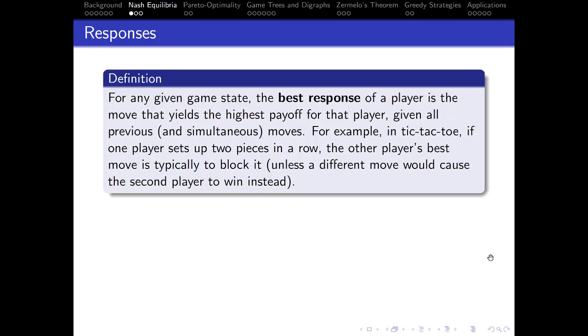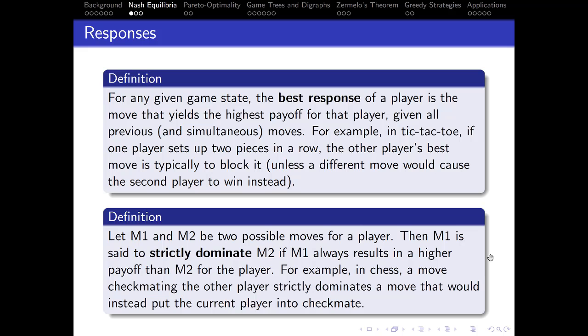For any given game state, the best response of a player is the move that yields the highest payoff for that player given all previous and simultaneous moves. For example, in tic-tac-toe, if one player sets up two pieces in a row, the other player's best move is typically to block it to prevent three in a row — unless a different move would cause the second player to win instead, in which case winning takes priority. M1 is said to strictly dominate M2 if M1 always results in a higher payoff than M2 for the player. In chess, a move checkmating the opponent strictly dominates a move that would put the current player into checkmate.